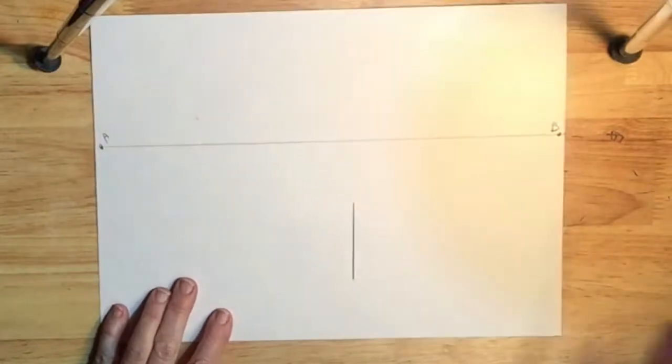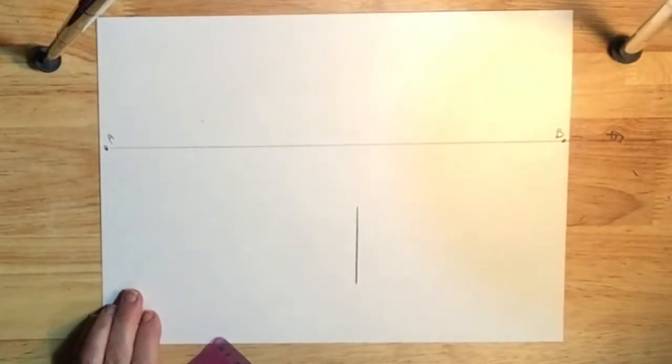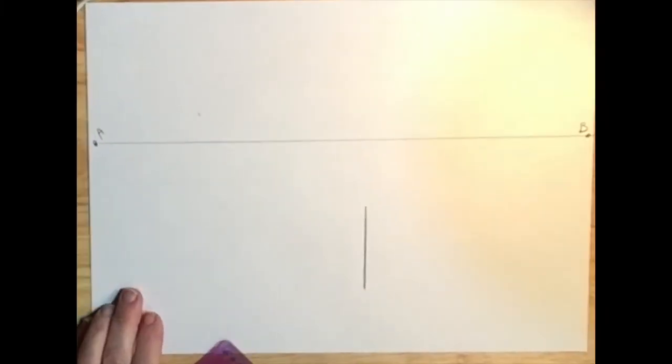First, we have to start out with a perspective structure, and you need the vanishing point that stands for the eye level. You need points A and B on either end, and you need a vertical line down below the horizon line.